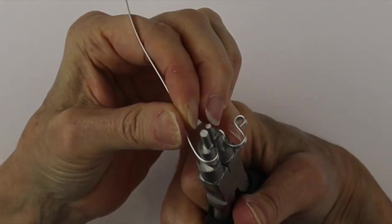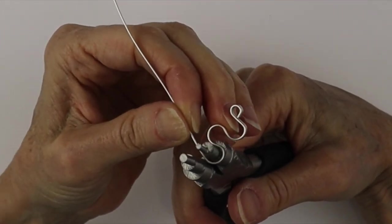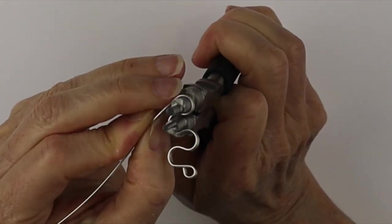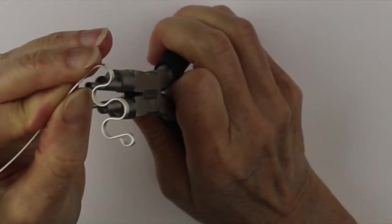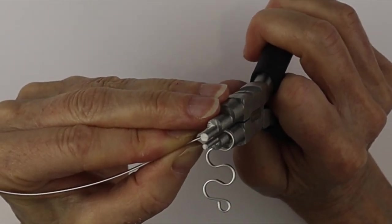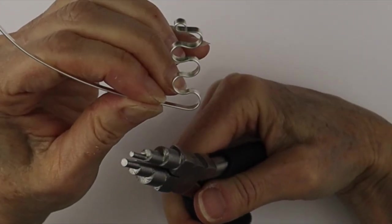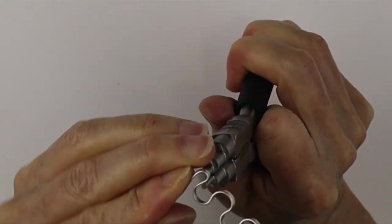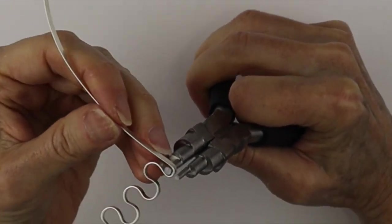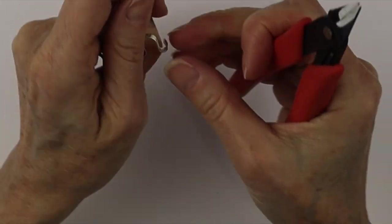We're going to go back and forth to do as many loops as we want, just making sure we make them all the same size. Hold it with the tools and then just bend the wire around. At the other end we can do a little loop, bring it around, and then we're going to have to clip it with our flush cutters. Give it a good little clip.